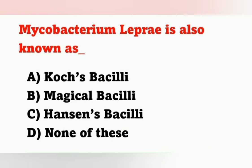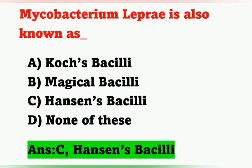The next question: Mycobacterium leprae is also known as? Options: Option A, Koch's bacilli; Option B, Magical bacilli; Option C, Hansen's bacilli; Option D, none of these. Mycobacterium leprae, which causes leprosy — also known as Hansen's disease — is called Hansen's bacilli. Option C is the correct answer.